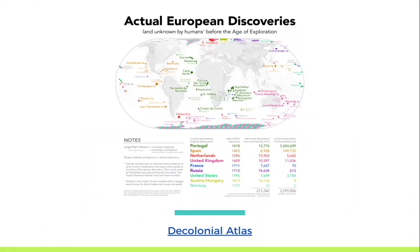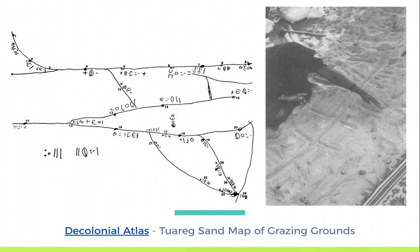There are several more examples on the Decolonial Atlas. One demonstrates the land that was actually discovered by Europeans — that is, was uninhabited before their arrival. The atlas includes many other examples, including a 1968 Tuareg sand map of grazing grounds, usually inscribed in the sand and recorded by Tuareg informants on paper later. You will remember the several examples given by Ingold of similar mapping strategies. The atlas gives fantastic detail to this map and the Tuareg experience of space.